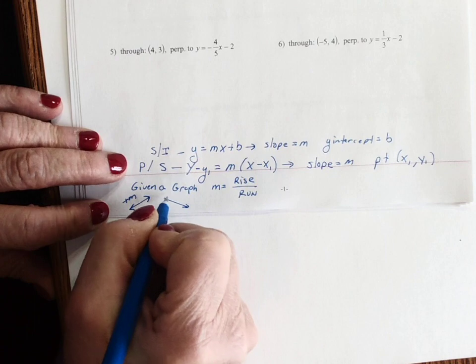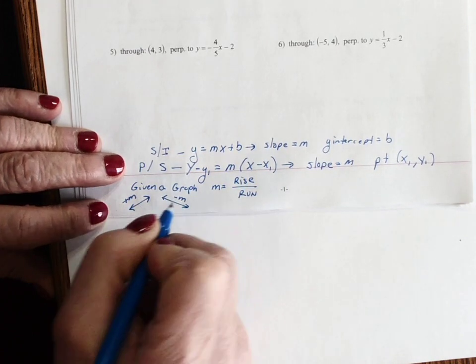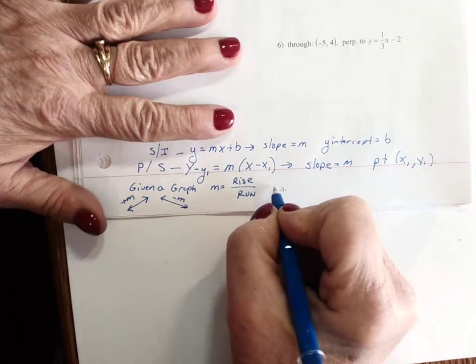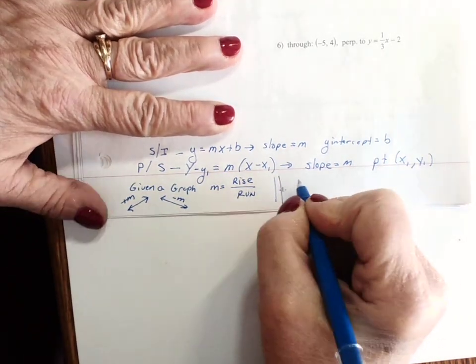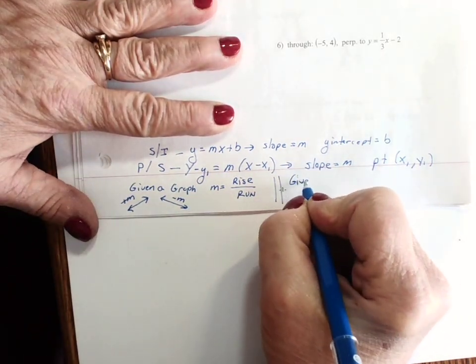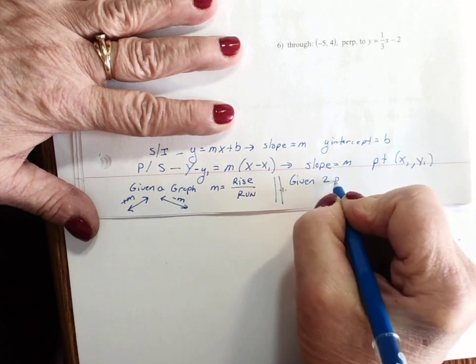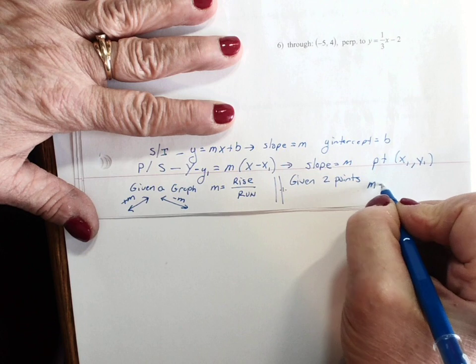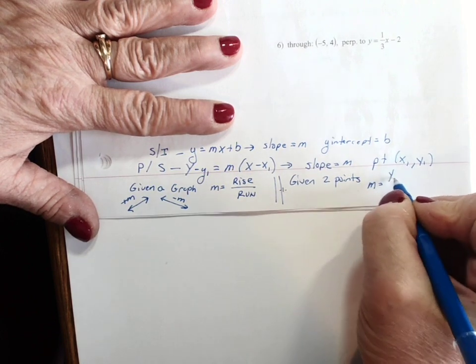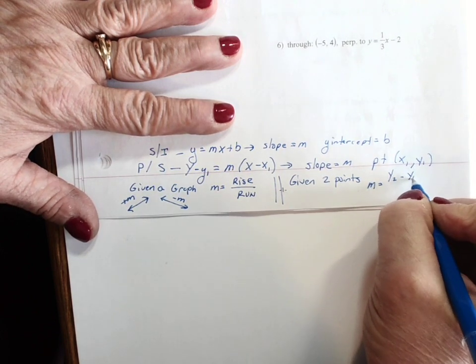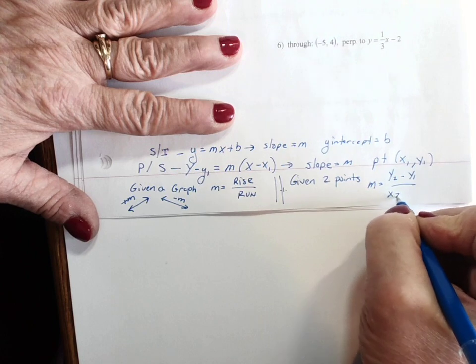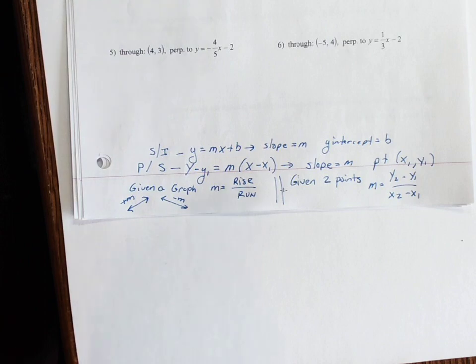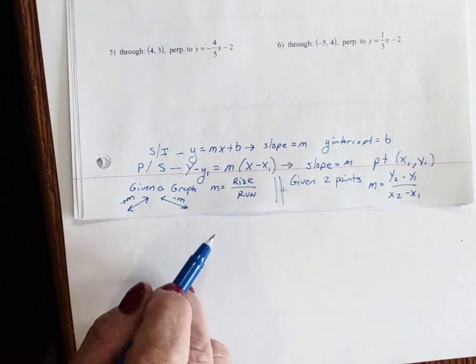If it's a negative slope your line goes like that. If you are given two points, here we have m equals y2 minus y1 over x2 minus x1. So you need to memorize these and know how to use them.